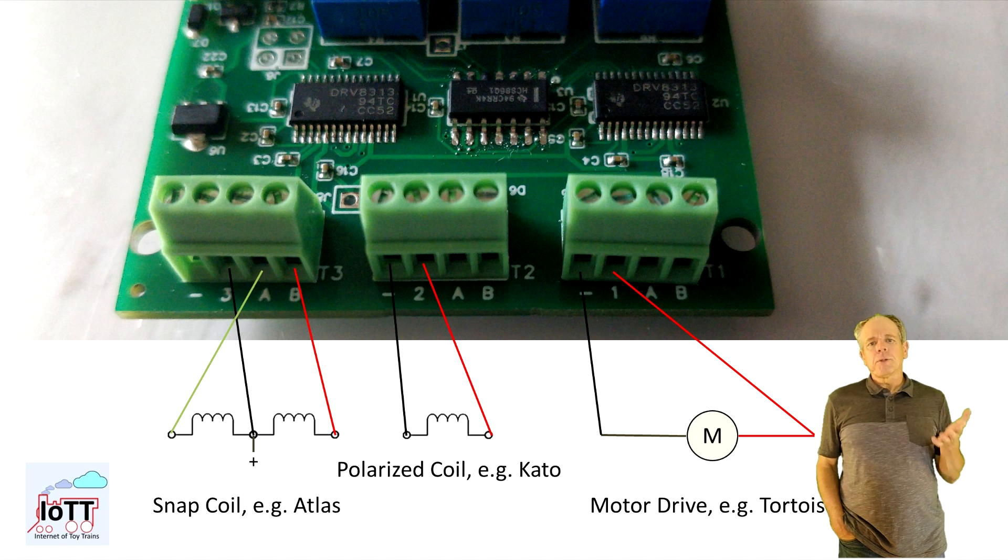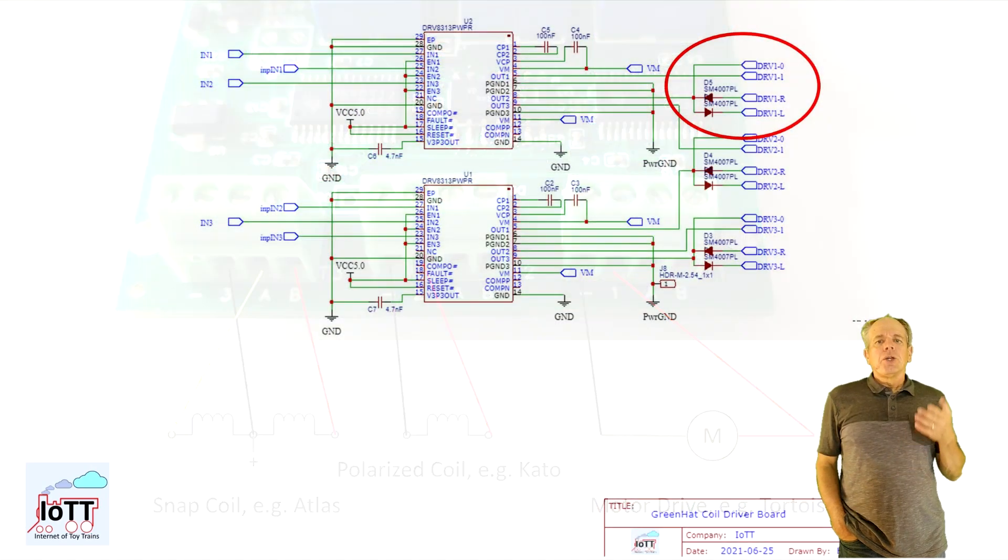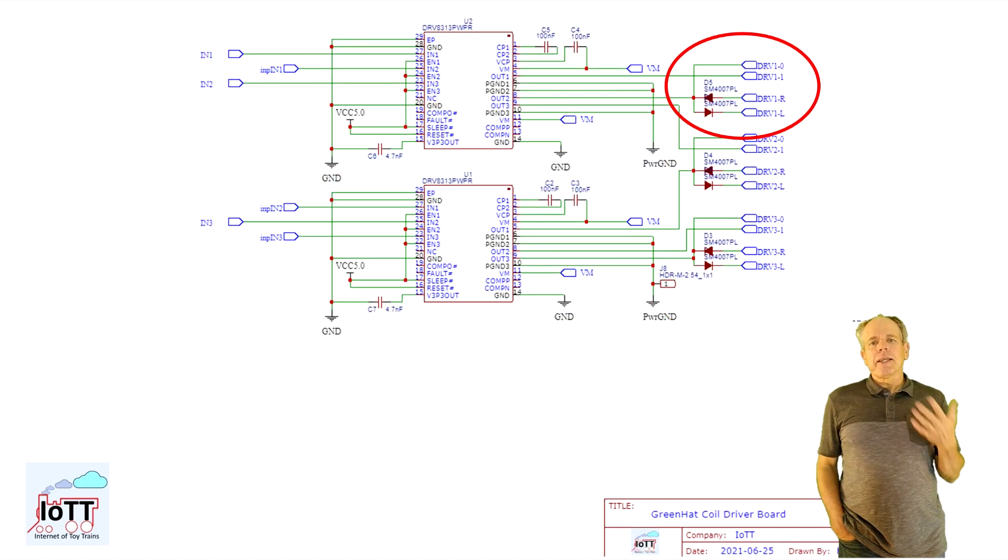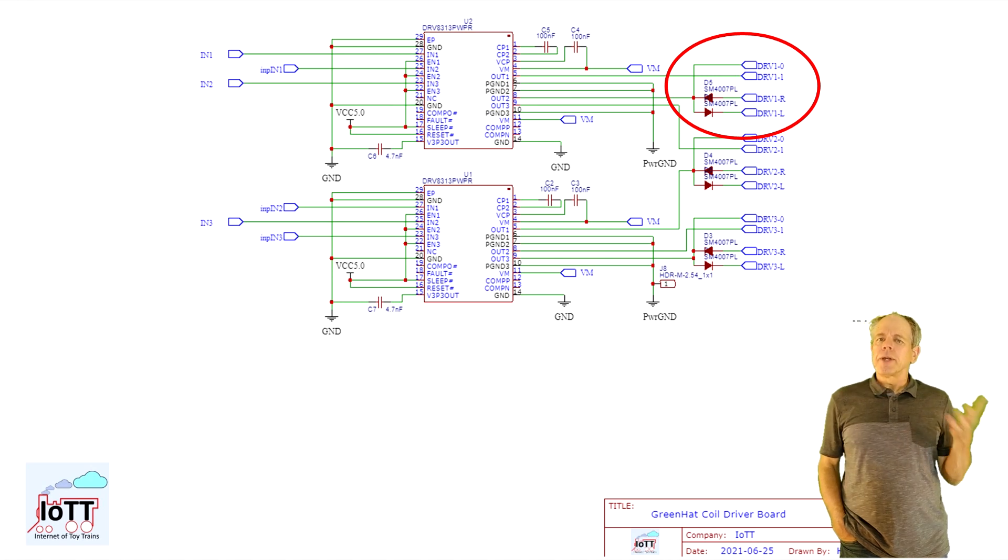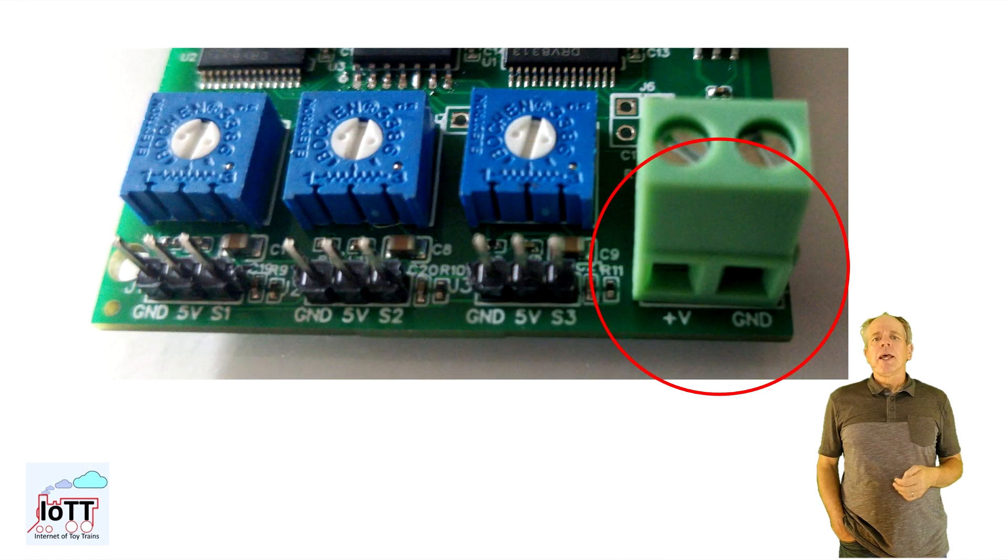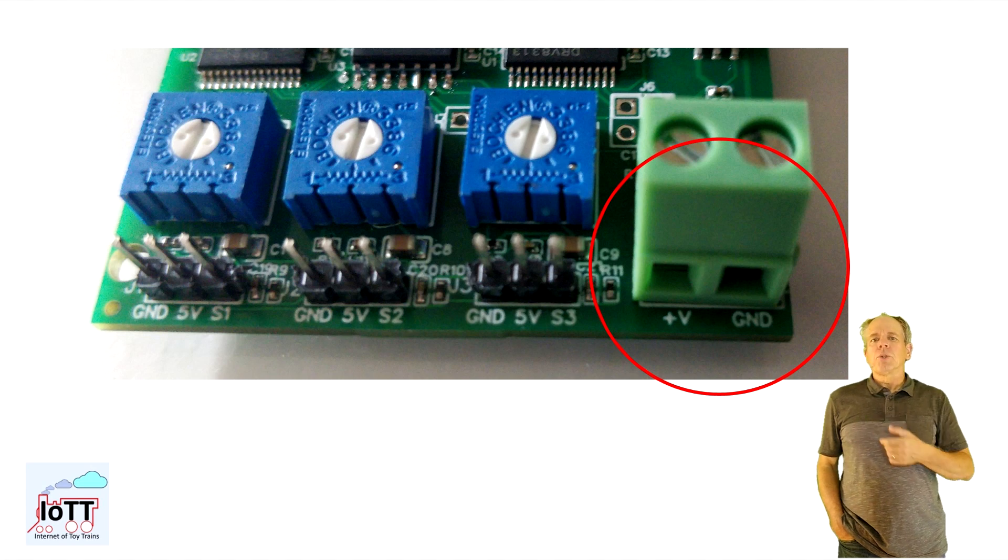The outputs offer the possibility to connect polarity-sensitive drives like tortoises or Kato polarized switches on pins 0 and 1. Or traditional snap switches on pins A and B with the common wire on pin 0. You can see the diodes on pins A and B that select one or the other coil based on the applied polarity. That should make it possible to connect pretty much every commercially available drive type. The output voltage thereby depends on the voltage that is connected to the power connector and can be from about 10 up to 30 volts if needed.